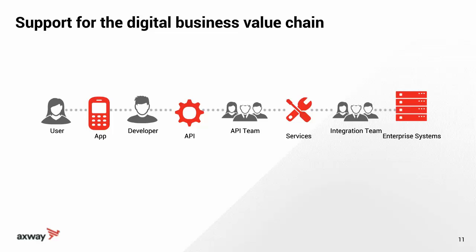Every single entity on this chain is important to the process. You need to have representation from all of them. You need to make sure that the users on the far left are properly represented, which you can do through the developers, but also directly — knowing what they are, what their needs are, what they're wanting. Remember: what I want, when I want, and whatever device I want. You want to interact with your developers to make sure they understand what's going on and know how to use your APIs, all the way down to your integration team and your enterprise systems. They all have to work cohesively together.